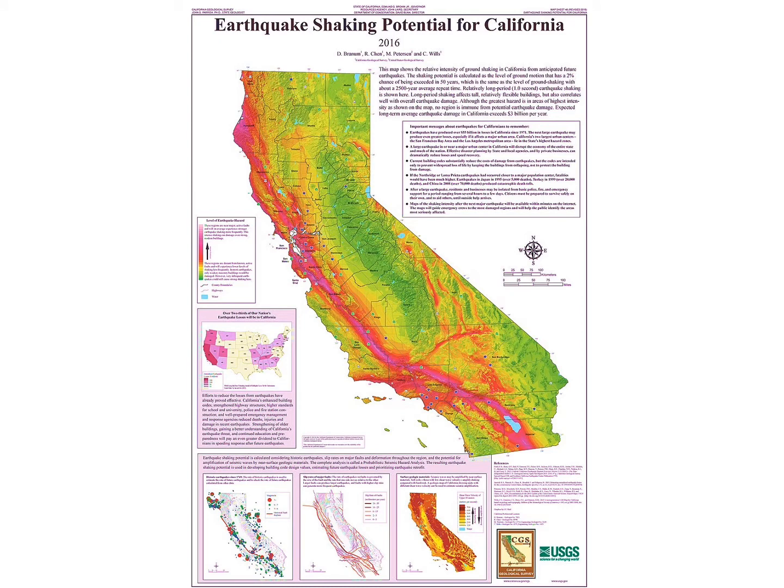This California geological survey map clearly shows the earthquake potential for the state and region. The San Andreas Fault is merely one of hundreds of active faults that exist in California. There is constant movement, although usually undetectable to human eyes, along the fault lines in this region. The earthquake in 1933 that damaged Long Beach resulted from movement along the Newport-Englewood Fault.